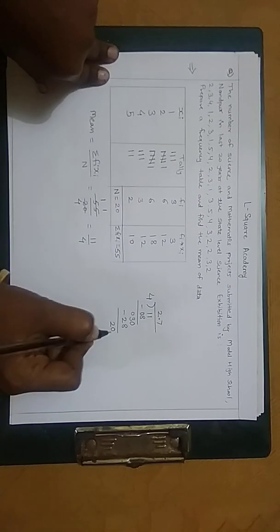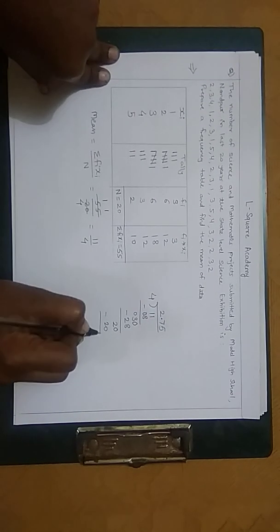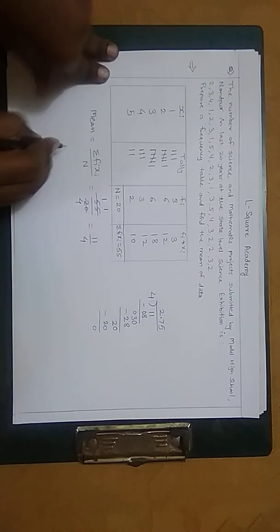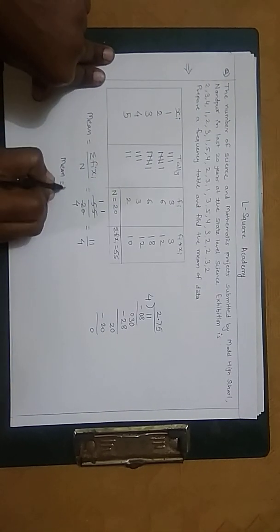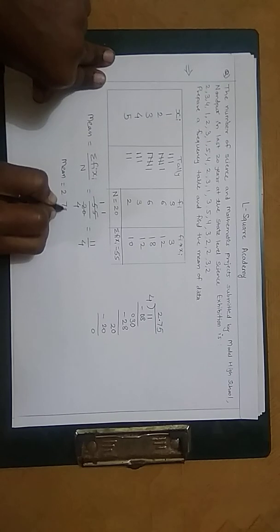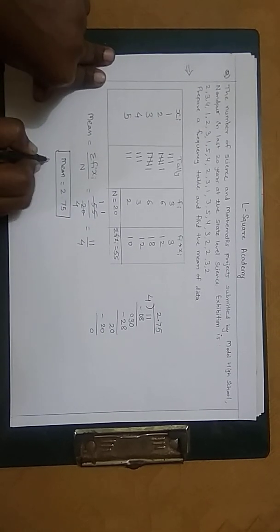Again the division will not be possible, so that's why again we write 0. 4 times 5 is 20, so 20 minus 20 will be 0. Now that's why the answer, the mean, will be 2.75. Thank you.